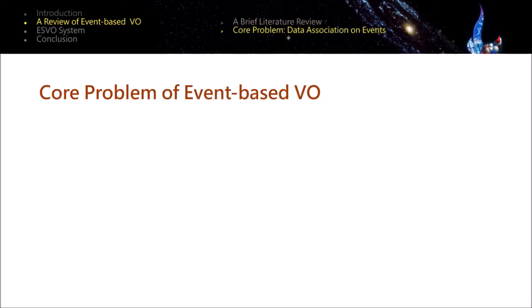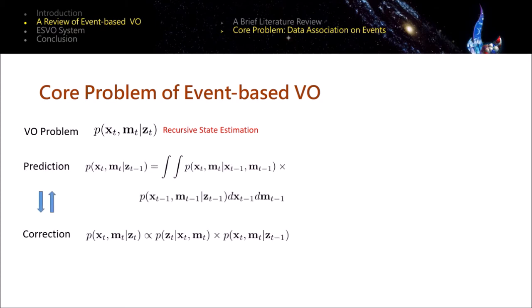Okay, that's pretty much about the literature review, and now you may be wondering what exactly the core problem is in the design of event-based visual odometry. From a Bayesian perspective, the nature of visual odometry is a recursive state estimation problem, which performs prediction and correction recursively. In practice, each sub-problem is solved assuming the status of the other is known.